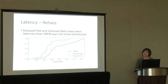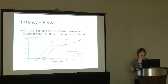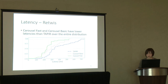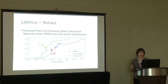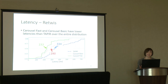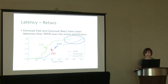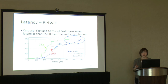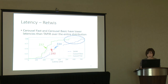Looking at the latency CDF using the Retweets workload, we found that both versions of Carousel have lower latency than Taper over the entire distribution. Specifically, at the median, Carousel Fast is 100 milliseconds less latency than Taper. In the tail, both versions of Carousel have a shorter tail than Taper. This is because we bound the transaction completion time to two roundtrips, whereas Taper requires at least three roundtrips when there are conflicting transactions.